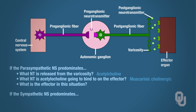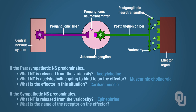Then if the sympathetic nervous system dominates, what neurotransmitter is released from the preganglionic fiber? Acetylcholine. What's the name of the receptor on the postganglionic fiber? Nicotinic cholinergic. What neurotransmitter gets released from the varicosities? Epinephrine. What is the name of the receptor on the effector? Adrenergic.